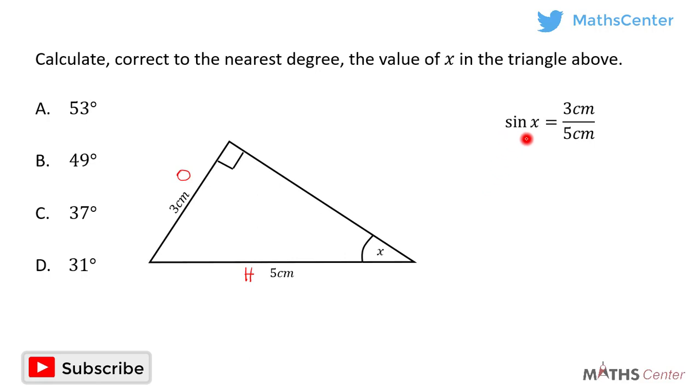And so sine x will be equal to the opposite side which is 3 centimeters divided by the hypotenuse which is 5 centimeters. Centimeters will cancel each other out, so you have sine x is equal to 3 divided by 5.